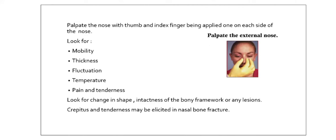For the palpation part, you palpate the nose with the thumb and index finger applied on each side. You look for mobility, thickness, fluctuation, temperature, pain, and tenderness, as all these features show some pathology. On deep palpation with a little more pressure, check for crepitus — a grating sensation due to rubbing of one structure against another — or tenderness, which is elicited in nasal bone fracture.